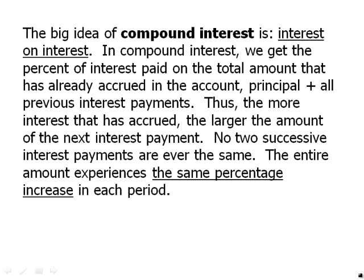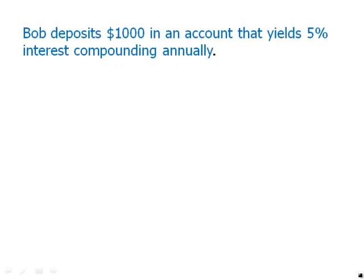So the dollar amount is always different. The entire amount experiences the same percentage increase in each period — it's the percent increase that stays the same. That's what's going on in compound interest. For example, Bob deposits $1,000 in an account that yields 5% interest compounding annually.